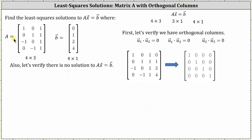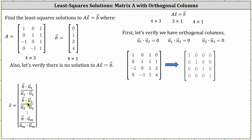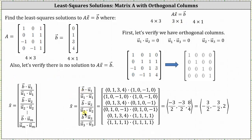Since we know the columns of matrix A are orthogonal, we can use the formula shown here to determine the least squares solution. We also know vector x̂, the least squares solution, will have three components, where vector x̂ is a three by one matrix. We simply need to find the quotient of the dot products, where vector B is the vector (0, 1, 3, 4). Notice this vector appears in all three numerators.